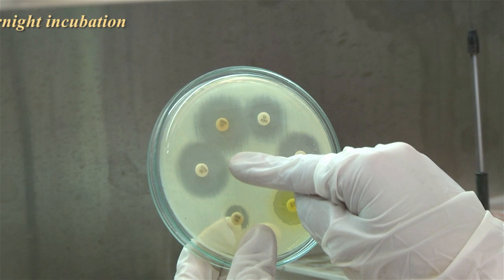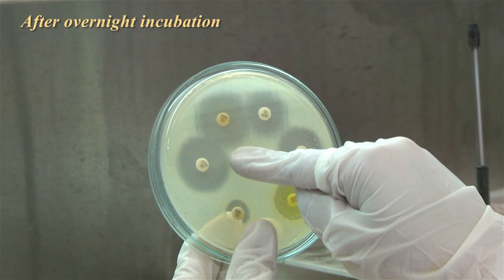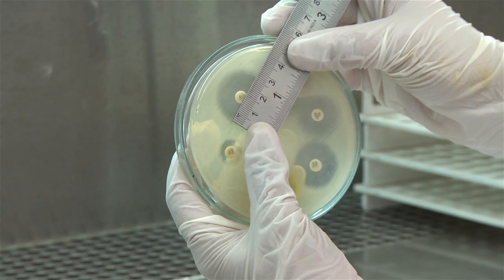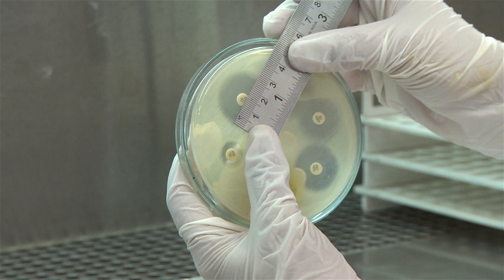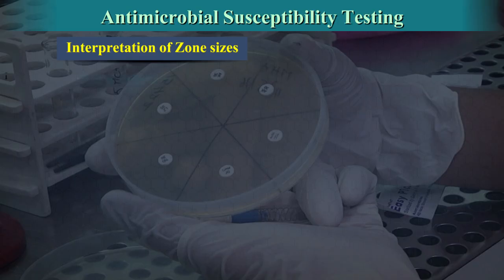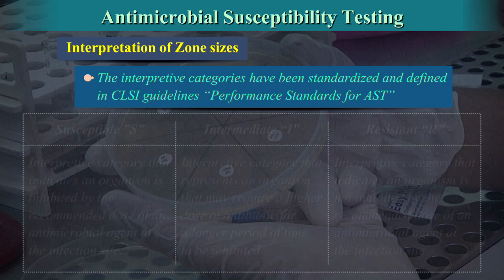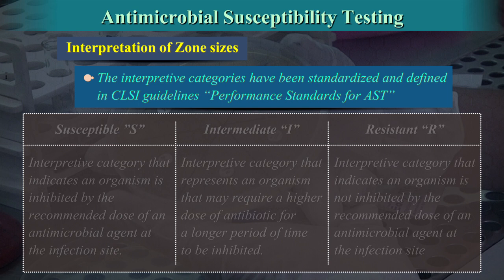Day 3: After overnight incubation, examine the control and test plates to ensure the growth is uniform. Using a ruler on the underside of the plate, measure the diameter of each zone of inhibition in mm. The end point of inhibition is where the growth starts. The interpretive categories have been standardised and defined in CLSI guidelines, performance standards for AST. These charts are available according to the isolates and help in guiding antimicrobial selection.